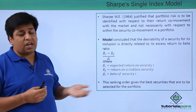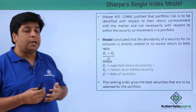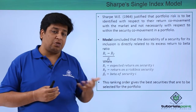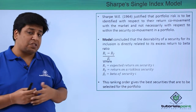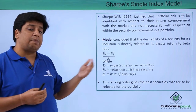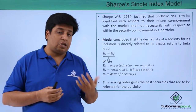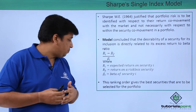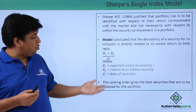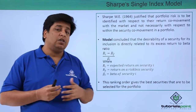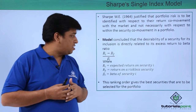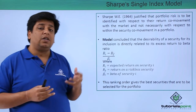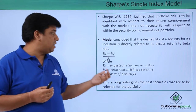The formula for calculating the excess return to beta ratio is (RI minus RF) divided by beta, where RI is the return of a security, RF is the risk-free return, and beta is the risk measure of that security. You construct this ratio and rank the securities, selecting the best-ranked ones for inclusion in your portfolio.